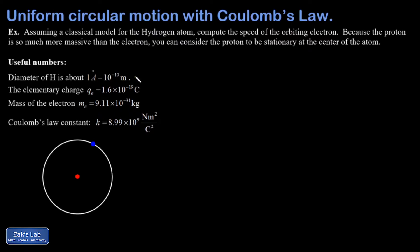So again, the diameter of the atom is one angstrom or 10 to the negative 10 meters, which means the radius of the orbit is going to be half that. The charge magnitude on the proton is plus qe, the elementary charge, and the charge magnitude on the electron is the same thing but it comes with a minus sign.